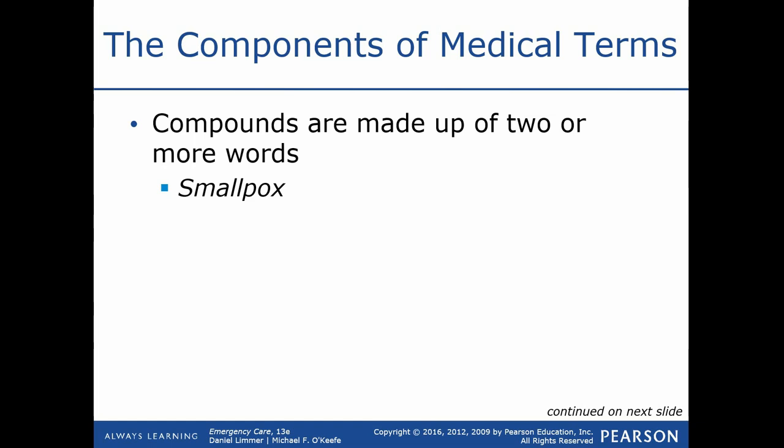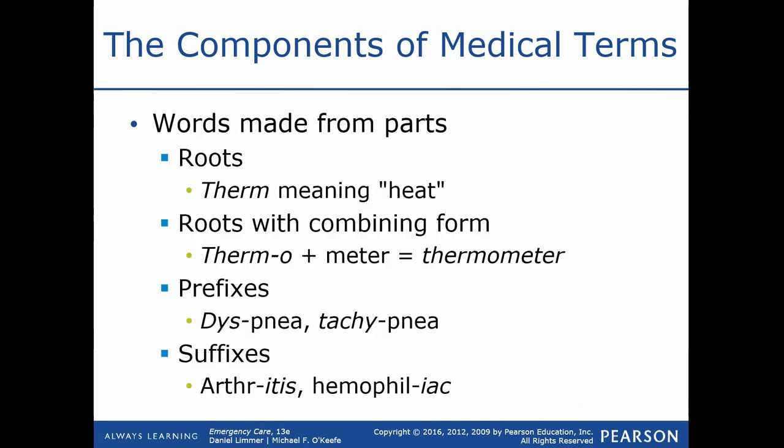Medical terms are typically divided into compound words — two or sometimes three separate words combined. If we look at those base words, we might be able to determine what the word means. For example, 'therm' means heat, and 'meter' means to measure something, so 'thermometer' means we're measuring heat.